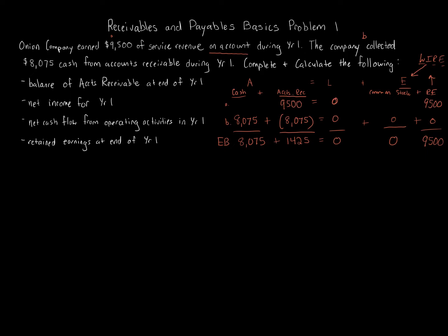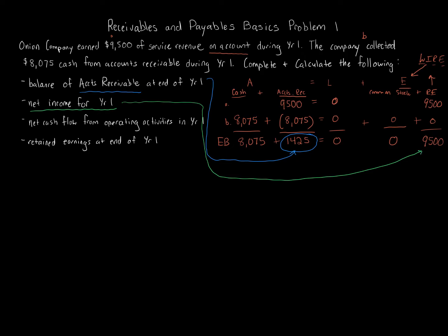Now let's go through the questions. The balance of accounts receivable at the end of year 1 — we have that from the accounting equation: $1,425. Next, net income for year 1. With these two transactions, this is straightforward — looking at retained earnings, the net income for year 1 is $9,500.